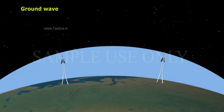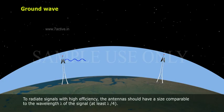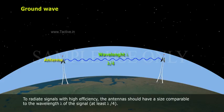Ground wave. To radiate signals with high efficiency, the antennas should have a size comparable to the wavelength lambda of the signal, at least approximately lambda by 4.